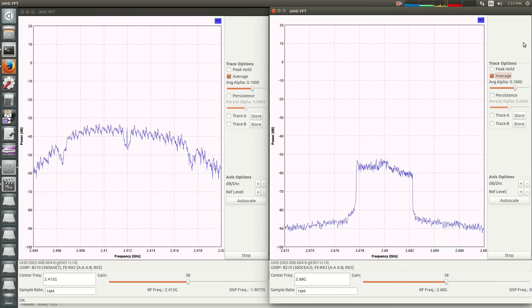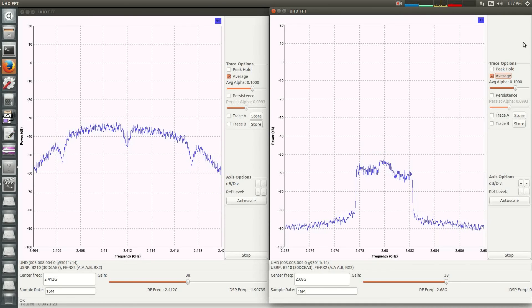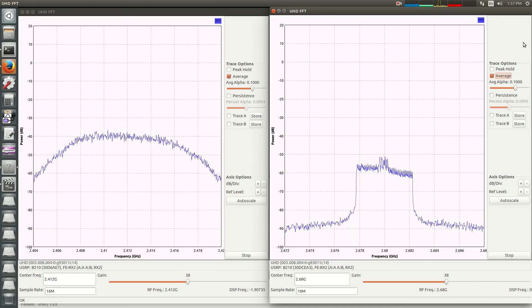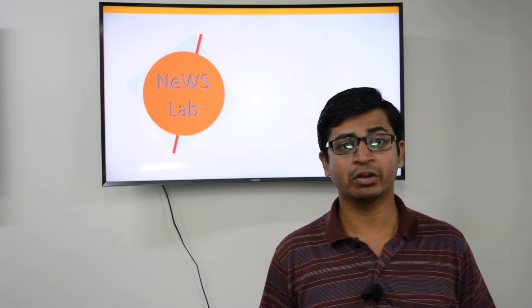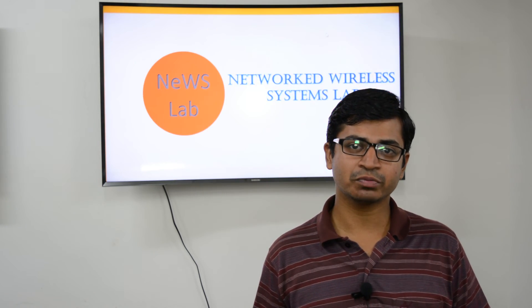You can see in LTE there is a significant amount of rise in power level, and in Wi-Fi as well, because we are downloading a file from a remote server which uses both the LTE and Wi-Fi technology simultaneously.